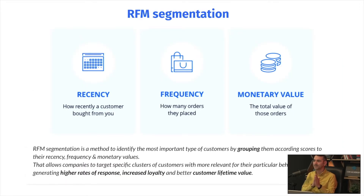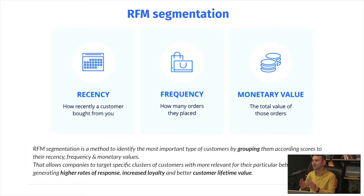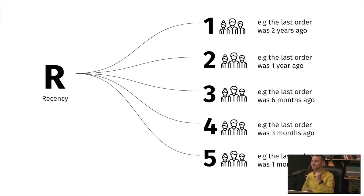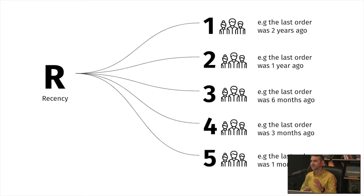RFM stands for Recency, Frequency, and Monetary Value. Recency means how recently a customer bought from you; Frequency is how many orders they placed; and Monetary Value is the total value of orders from that particular customer. The scale you use can be from one to three, four, or five. If you have fewer than 50,000 customers, use a scale of one to three; fewer than 500,000, use one to four; and more than 500,000 customers, use one to five.